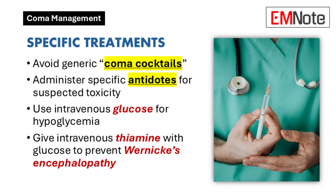Treatment for coma is guided by the underlying cause. Cocktails of treatment are not recommended; antidotes should be administered for suspected toxicity. Intravenous glucose is the first-line treatment for low blood sugar. Intravenous thiamine should be given concurrently with glucose to patients at risk of Wernicke's encephalopathy.